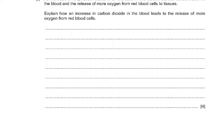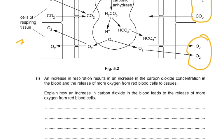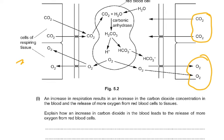More carbon dioxide diffuses into red blood cells. More carbonic acid is formed by carbonic anhydrase, leading to formation of more hydrogen ions as the carbonic acid dissociates. Hemoglobin has a higher affinity for hydrogen ions than for oxygen, so hemoglobin binds more hydrogen ions to form hemoglobinic acid (HHb). The formation of hemoglobinic acid decreases the affinity of hemoglobin for oxygen, so hemoglobin releases more oxygen.